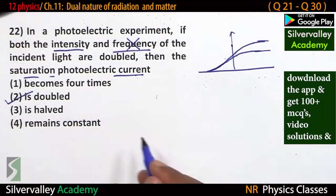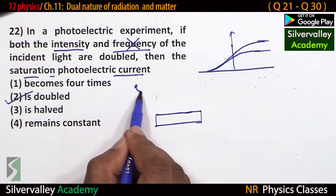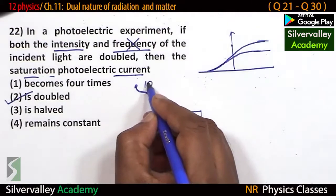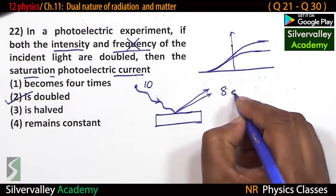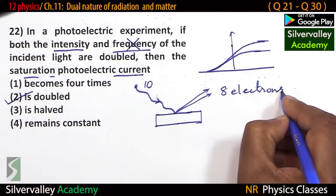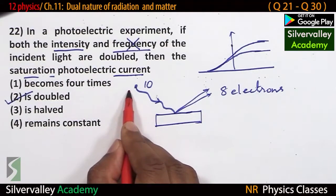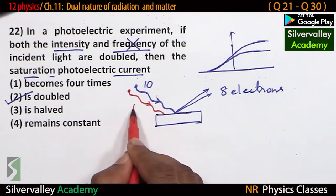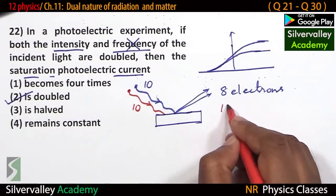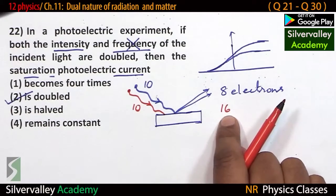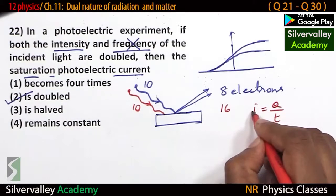Understand through the experiment: if this is a metal and a source gives 10 photons, because of 10 photons, maximum say 8 electrons are emitted, corresponding to which there is some current. If intensity is doubled — meaning we add one more source also giving 10 photons — number of photons is doubled, so number of electrons becomes 16. If number of electrons is doubled, then photoelectric current also gets doubled, because current equals charge by time.